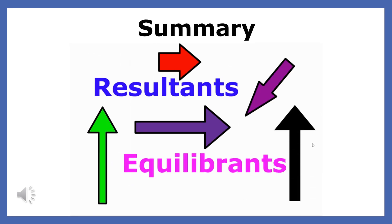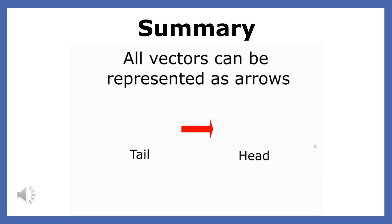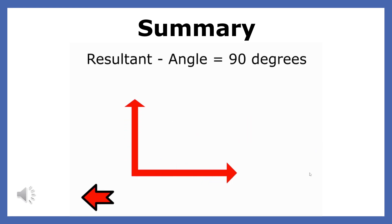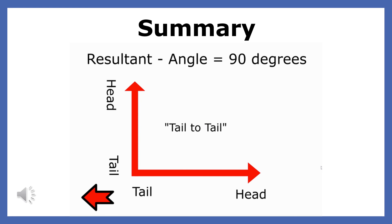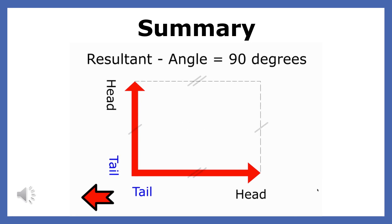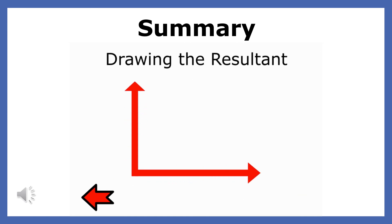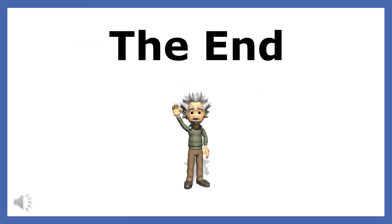When two forces are separated by 90 degrees and are connected tail to tail, we can use the parallelogram method to find the resultant. When we draw the vectors to scale, we can use a protractor and a ruler to find the direction and magnitude of the resultant. A more accurate way to find the resultant is to use the Pythagorean theorem and the tangent function. And this is the end of my presentation on how to find the resultant of two vectors that are separated by an angle of 90 degrees.